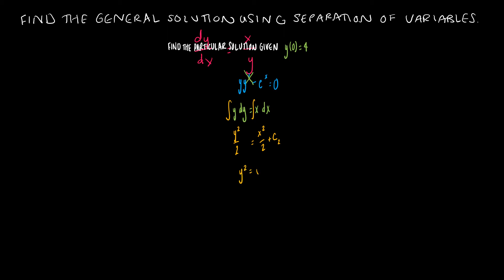That gives me y squared equals x squared. Technically that's going to be 2C, but that's just a new constant — it's pretty typical to just leave that as C without subscripts. In terms of the correct way to write the general solution, quite often you will see y squared minus x squared equals C. Or if they ask you to find this explicitly for y, you would have y equals plus or minus the square root of x squared plus C. Typically, this is the way you're going to want to leave it.